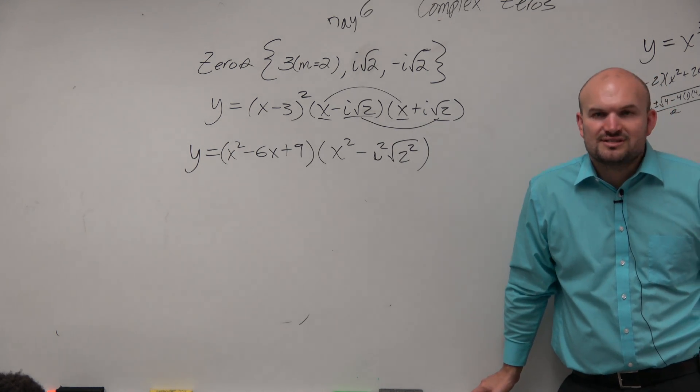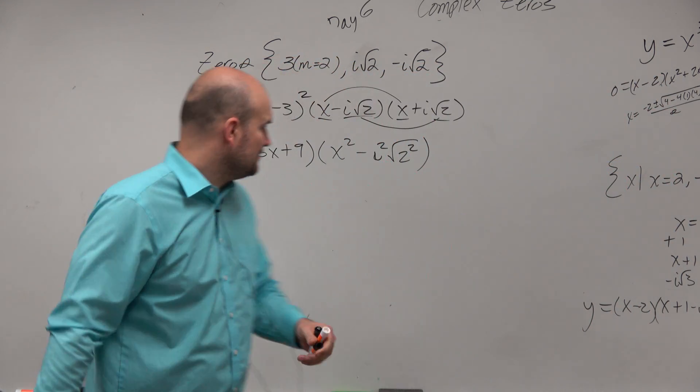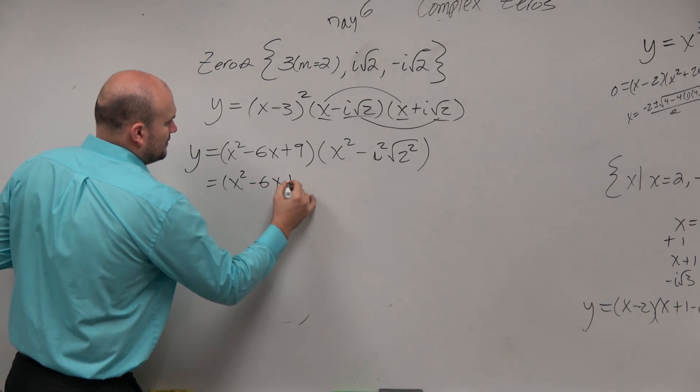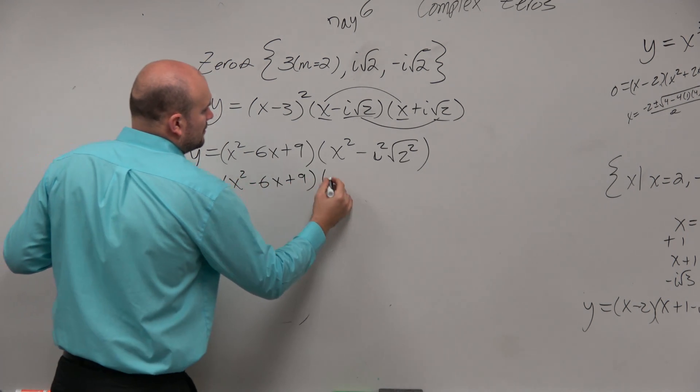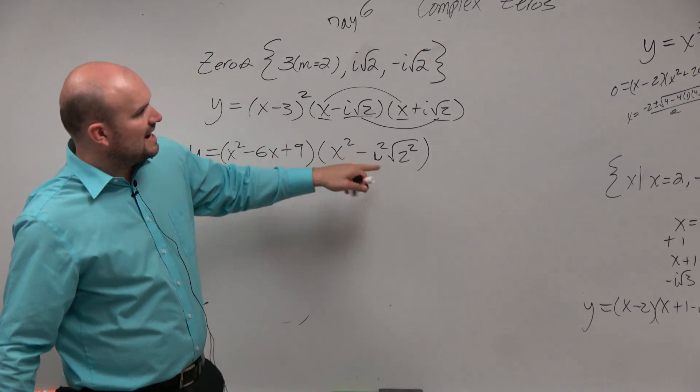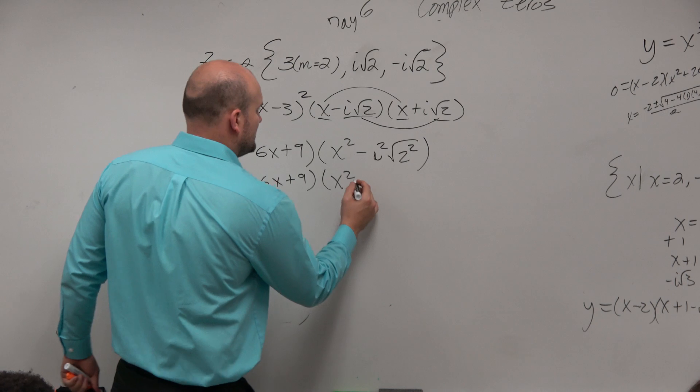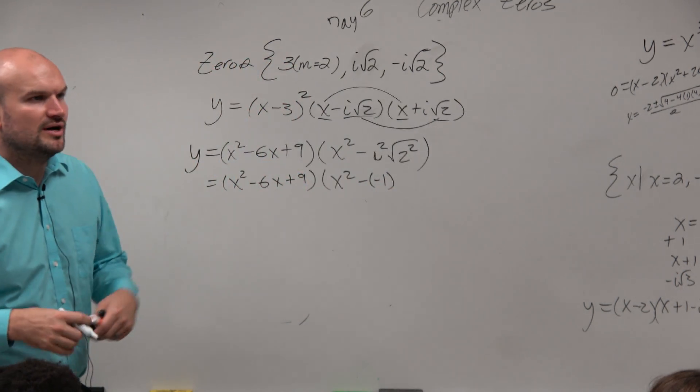But in reality, guys, you'll notice it's the same pattern happening over and over again. Guys, what was i squared represented equal as? Negative 1. OK. So that really wasn't that bad. And the square root of 2 squared?